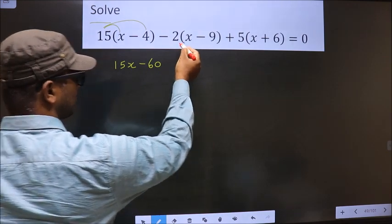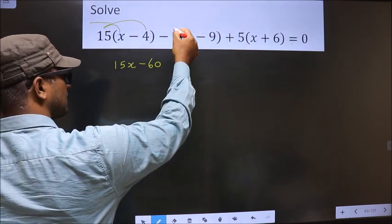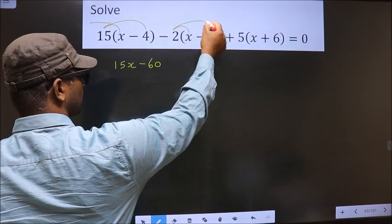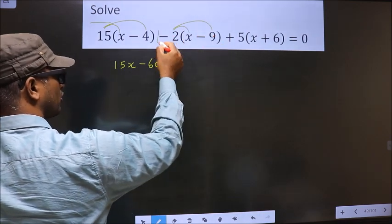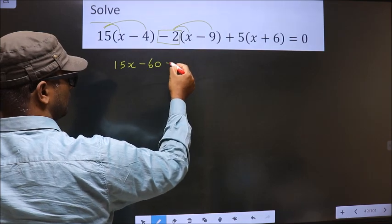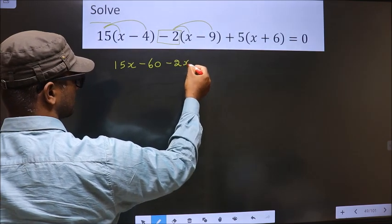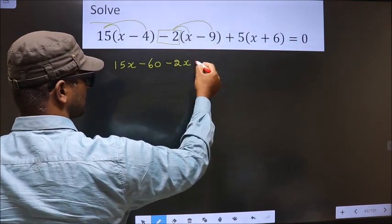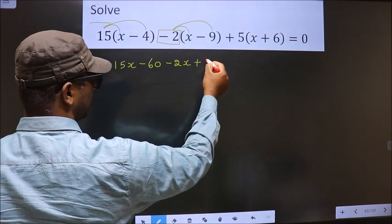Now here many do the mistake. They just open with plus 2, whereas you should open up the bracket with minus 2. So minus 2 into x is minus 2x. Now minus minus plus, 2 into 9 is 18.